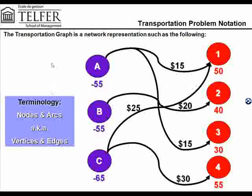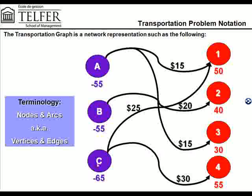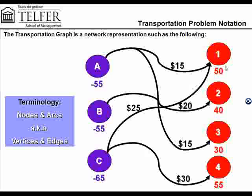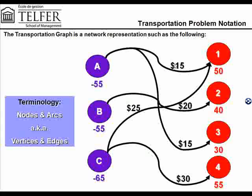The other notation is a transportation graph or graph diagram. It uses supply points and demand points as vertices or nodes in the diagram. You have three nodes for your supply points and four nodes for your demand points. Underneath each of those nodes, you're given the actual demand or supply possible out of those points. If we're talking about a supply point, typically the supply is shown in negative. So supply point A can supply 55 units, supply point B can supply 55 units, and supply point C can supply 65. Demand point 1 has a requirement of 50 units, and demand point 3 has a demand for 30 units.